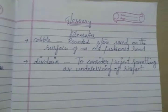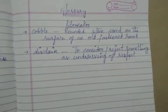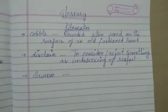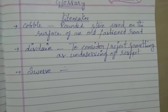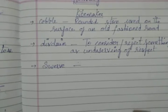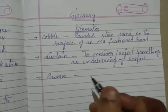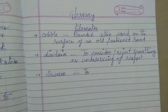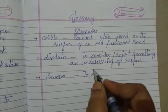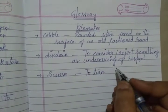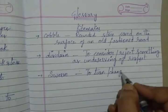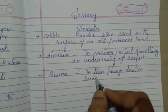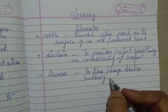Next one. First I'll write the spelling, then I'm going to pronounce it. Swerve — the R is going to be silent. To turn or change direction suddenly.